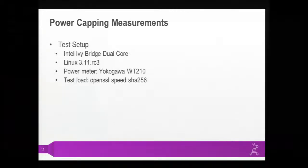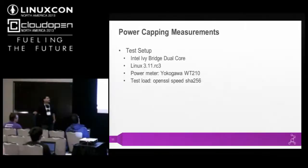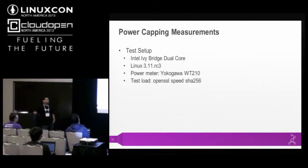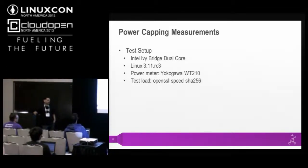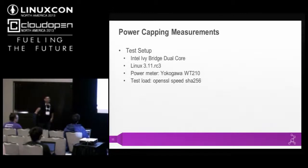This is our test setup. We used an Intel Ivy Bridge system with Linux 3.11 RC3, an external power meter — Yokogawa WT210 — and our test load for all the slides is OpenSSL speed test with SHA-256. In one of the slides we also use a server system where we need many CPUs to offline. For the majority of slides, this is the test system.